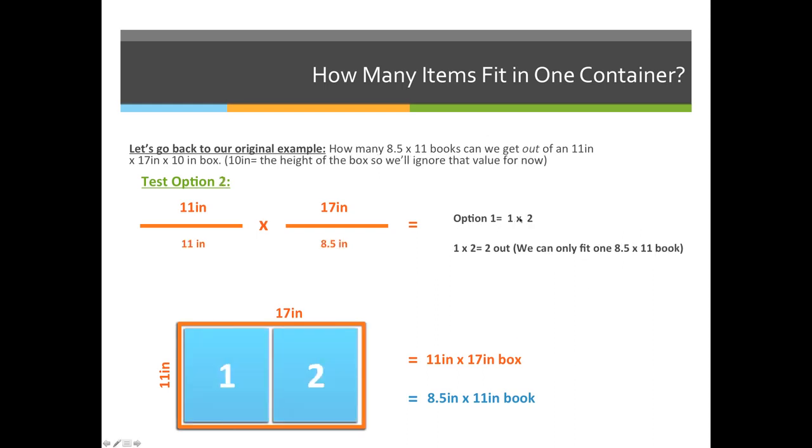So option two is the same formula. So 11 by 17, that's the size of our box, divided by, now this time we're going to switch the bottom values. So the width of our book is going to move to the left hand side, and the height is on the right hand side.